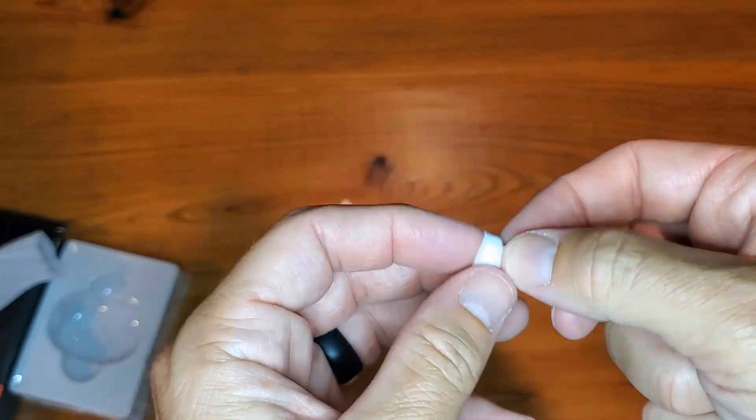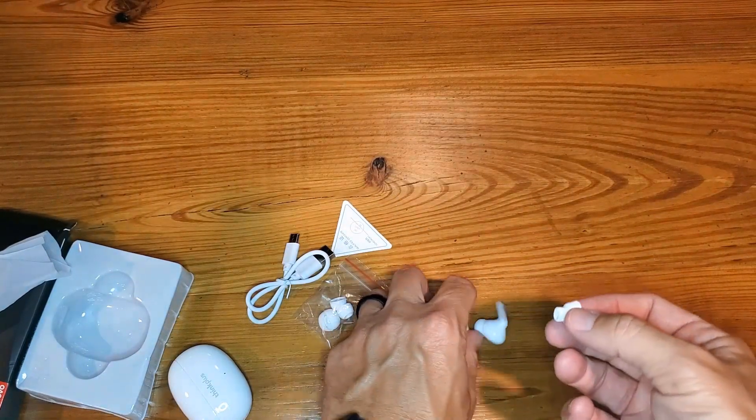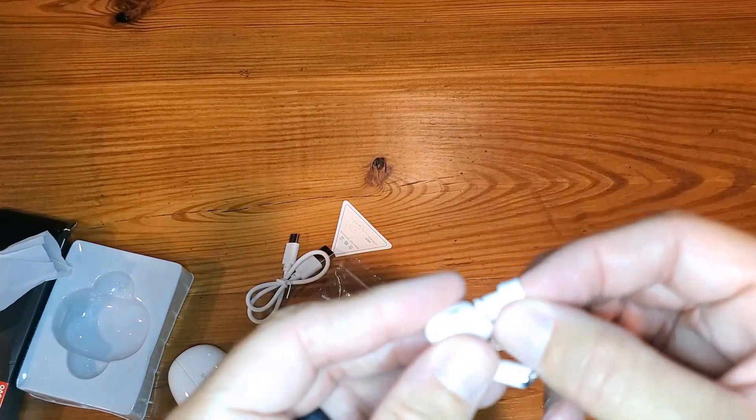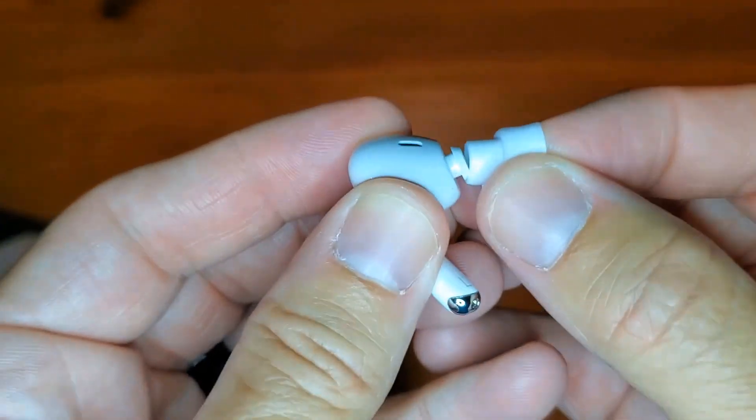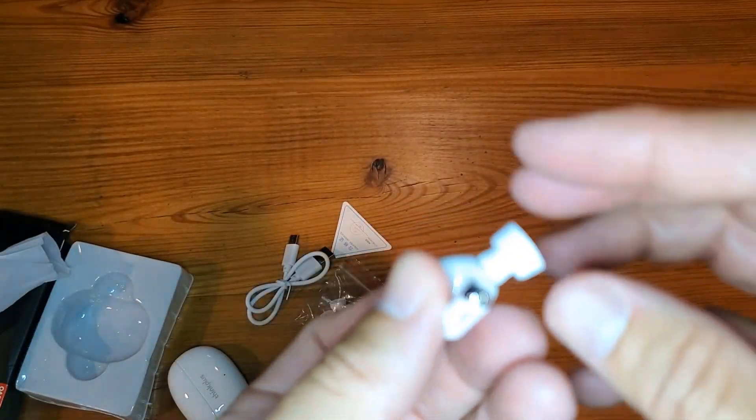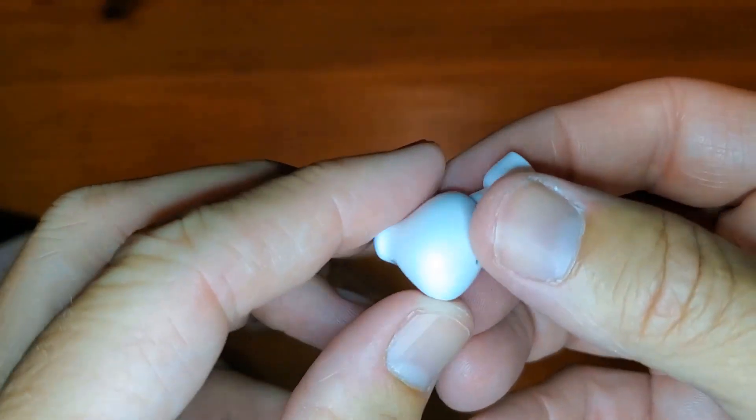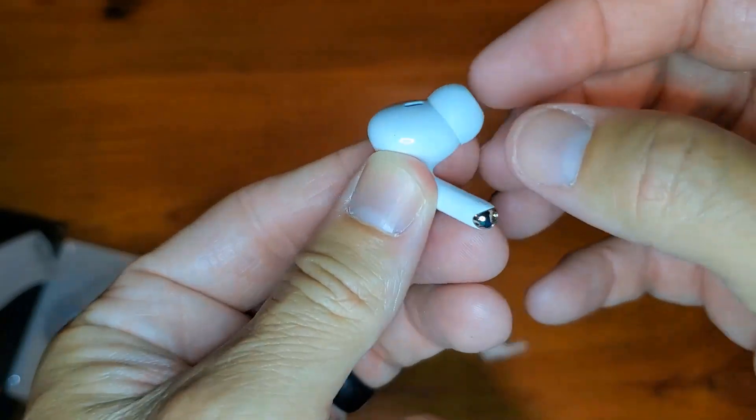What you'll do is peel it back like so, and then make sure that it goes right on that hole. It should just pop right on, and once it's on completely like that, you're just going to drop that on.